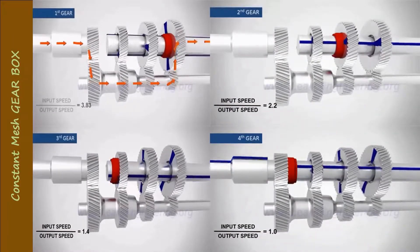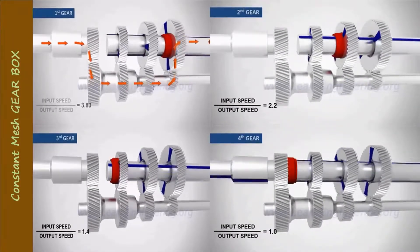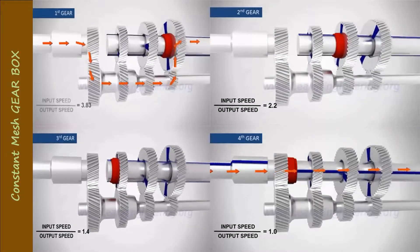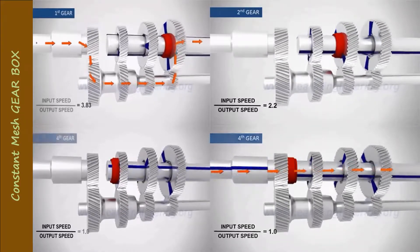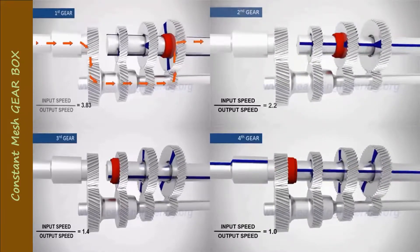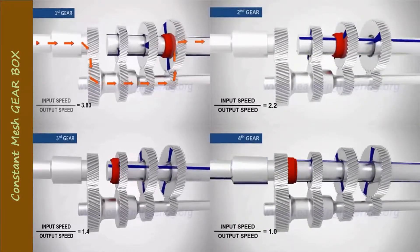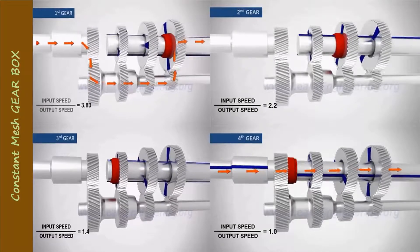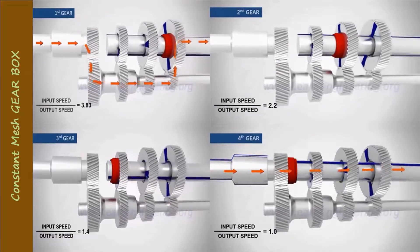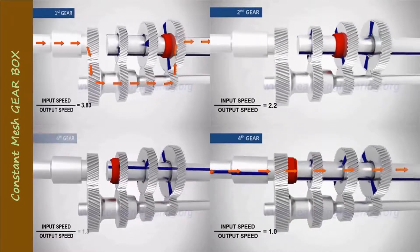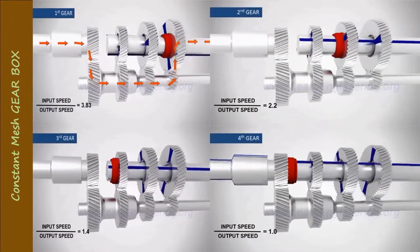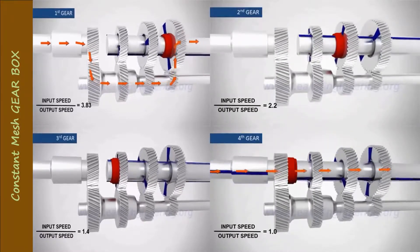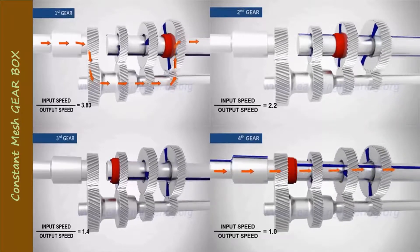In the diagram shown, you can see how the first gear, second gear, third gear, and fourth gear transmit power, along with their respective gear ratios.